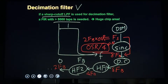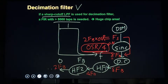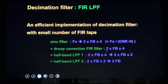If another half-band filter HF3 is added, then the sinc filter's reduction factor becomes one half of what it was. This cascaded architecture is known to be the most economical implementation of a decimation filter.